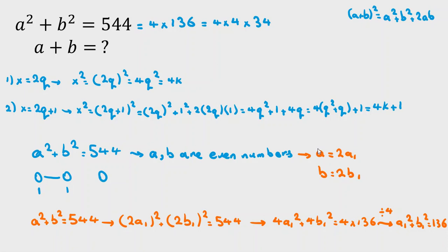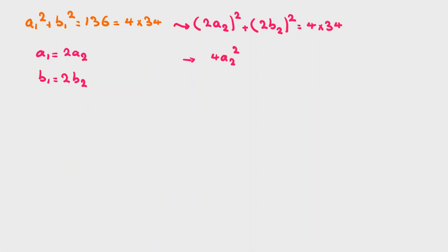If we use the same thing again, we conclude a1, b1 should be even. a1 squared plus b1 squared equal to 136, which is 4 times 34. Again, we can conclude a1 is even. a1 is 2a2, b1 is 2b2. So a1 squared will be 2a2 squared, b1 squared will be 2b2 squared, equal 4 times 34. 4a2 squared plus 4b2 squared equal to 4 times 34. Then we divide both sides by 4. It will be a2 squared plus b2 squared equal to 34.